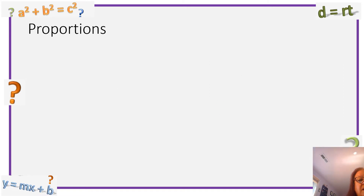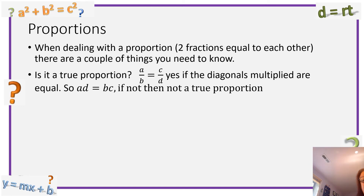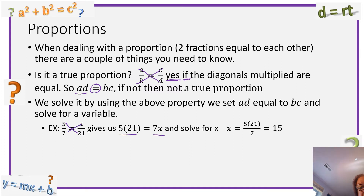Proportions. One thing you'll be tested on is proportions — two fractions that equal each other. First, is it a true proportion? Yes, if the diagonals multiplied are equal: A times D must equal B times C. If not, it is not a true proportion. That will be a question — you have to say yes or no. To solve a proportion with a variable, set AD equal to BC: so 5 times 21 equals 7 times X. Divide both sides by 7, so X equals 5 times 21 over 7, which is 15.